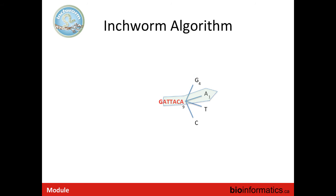We look up all further k-mers and find we can break the tie — A wins, so we go in that direction. We keep extending one base at a time, using tie-breaking when needed, until none of the four possible k-mers appear in our table. That's our stopping condition. Once we finish extending to the right, we do the same thing extending to the left, keep going until we run out of options, and then stop and report that contig sequence as our first Inchworm contig.